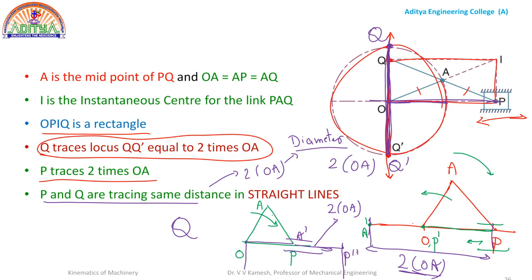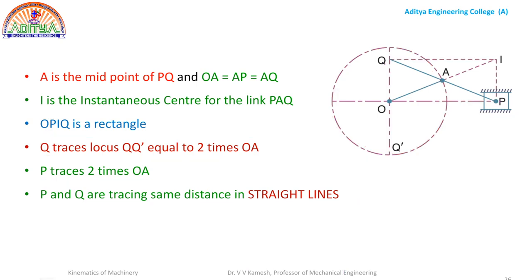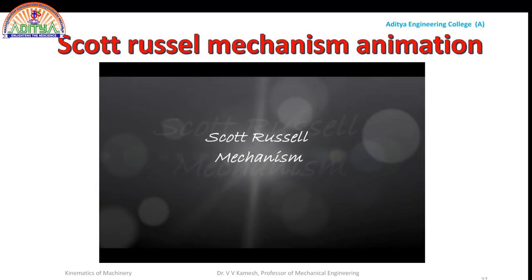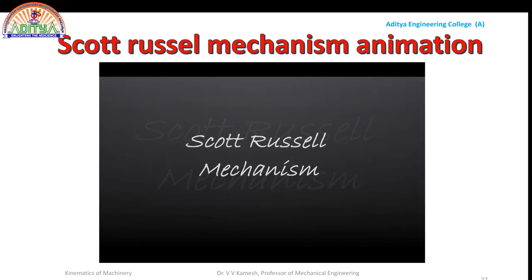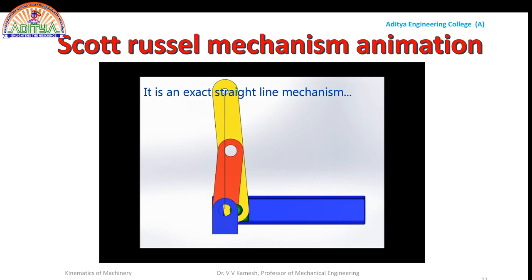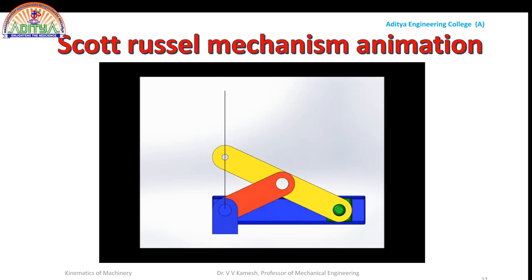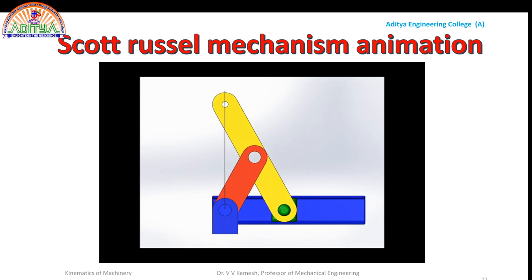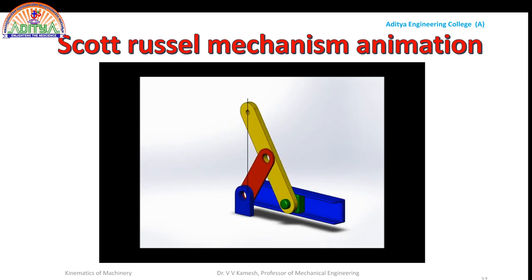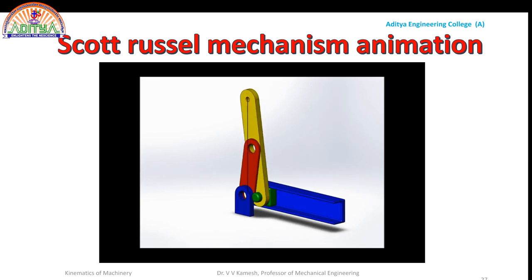In today's session, we discussed the exact straight line motion mechanisms: Peaucellier mechanism, Hart mechanism, and Scott Russell mechanism. The Peaucellier mechanism and Hart mechanism consist of fully rotary pairs, while the Scott Russell mechanism consists of one sliding pair.